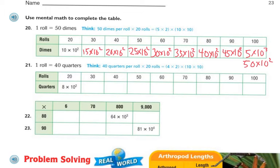21 is one roll equals 40 quarters, so think about it — 40 quarters per roll times 20. That's the same thing if we go to our basic facts using the 4 and the 2, so 4 times 2, and then again we're multiplying 10 times 10, or the second power of 10.